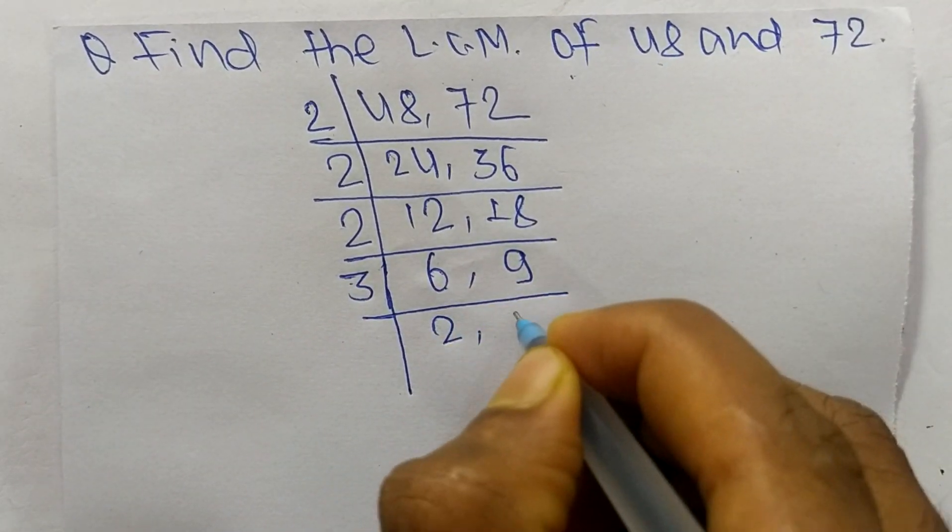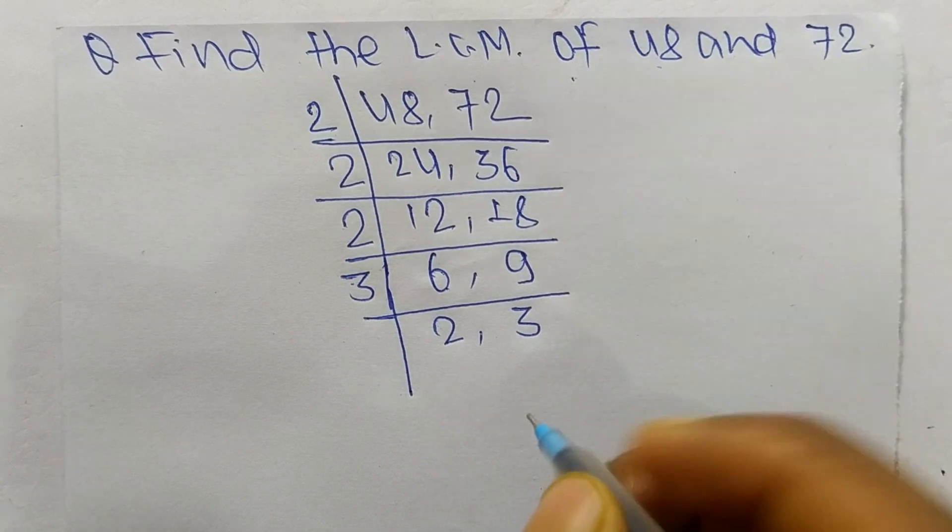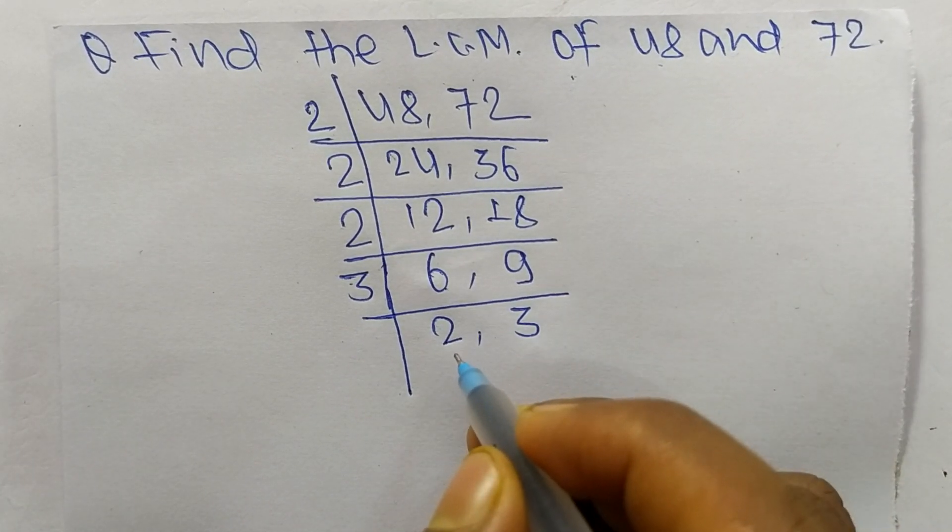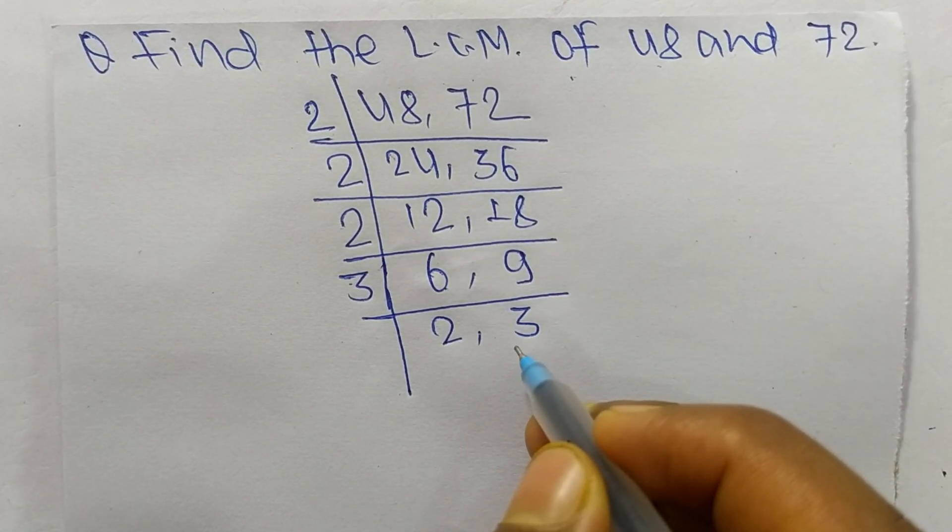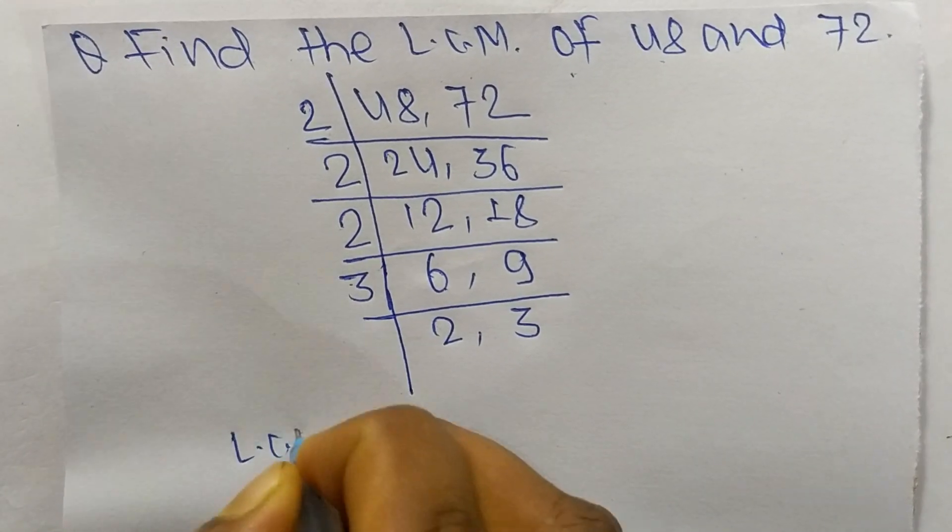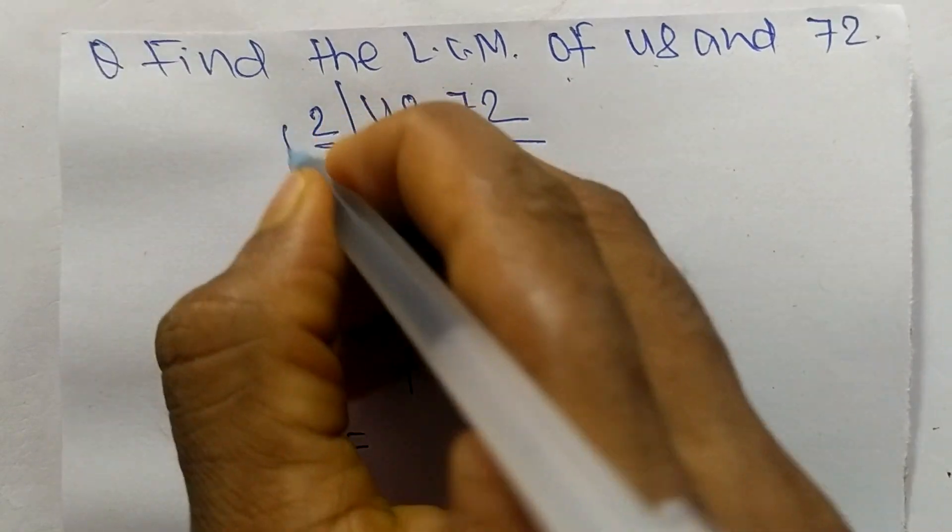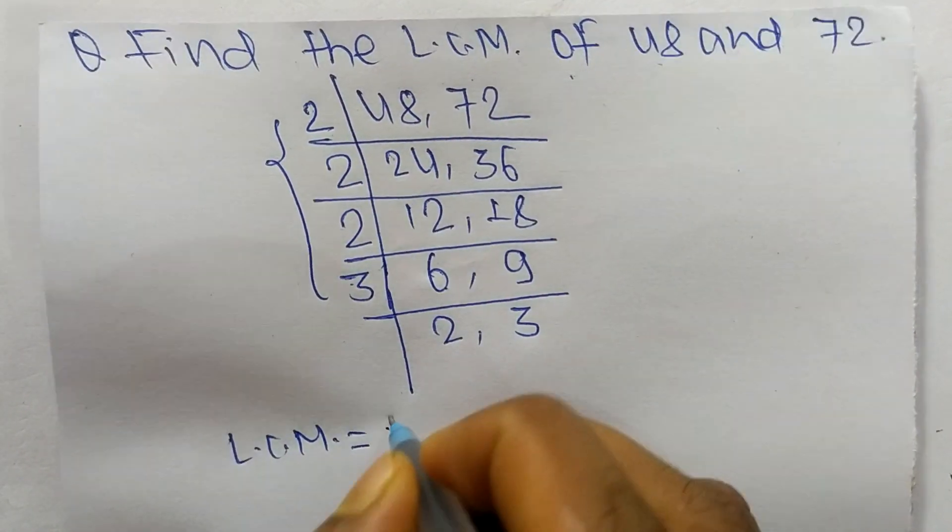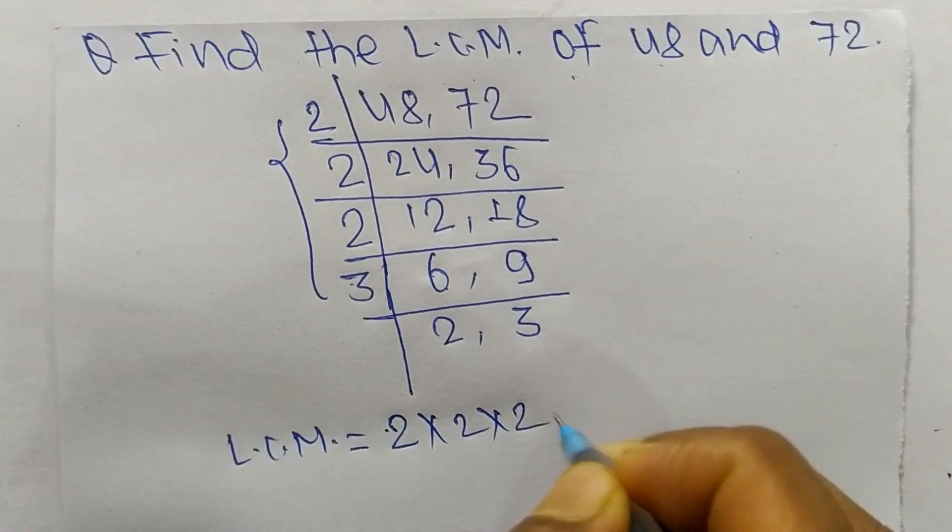3 times 2 means 6 and 3 times 3 means 9. So now we have 2 and 3 which are not exactly divisible by the same number. So the LCM is equal to, from this part it is 2 times 2 times 2 times 3.